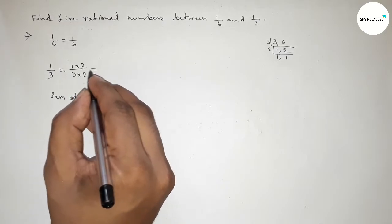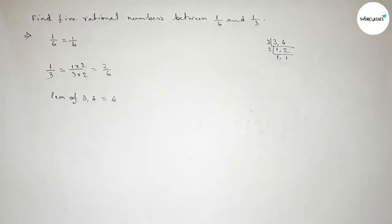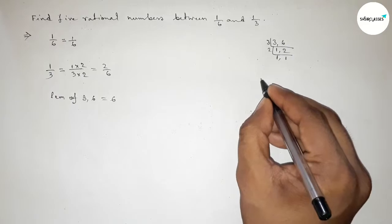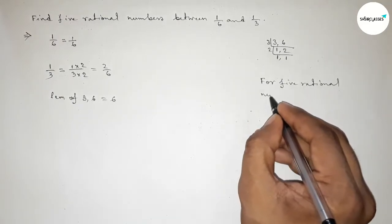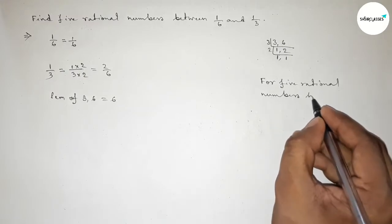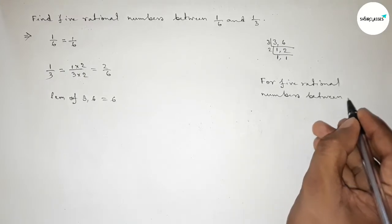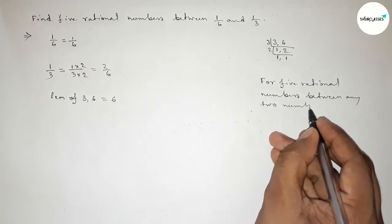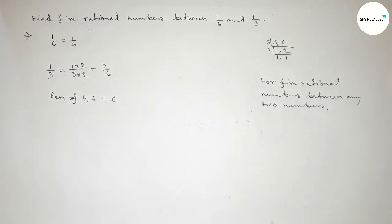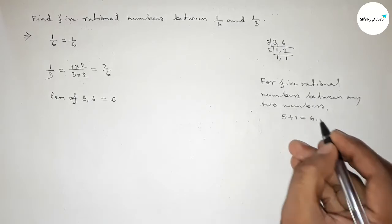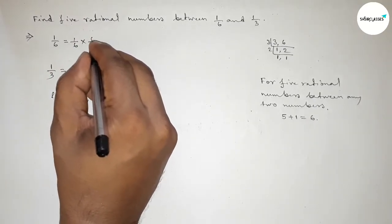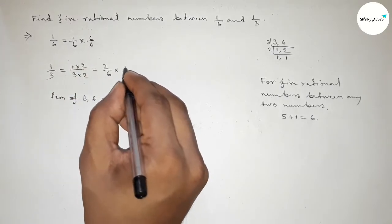Now discussing here an important method. So for finding five rational numbers between any two numbers we have to follow this method: we should multiply both numbers by 5 plus 1. So 5 plus 1 equal to 6, so we should multiply both numbers by 6 by this way.